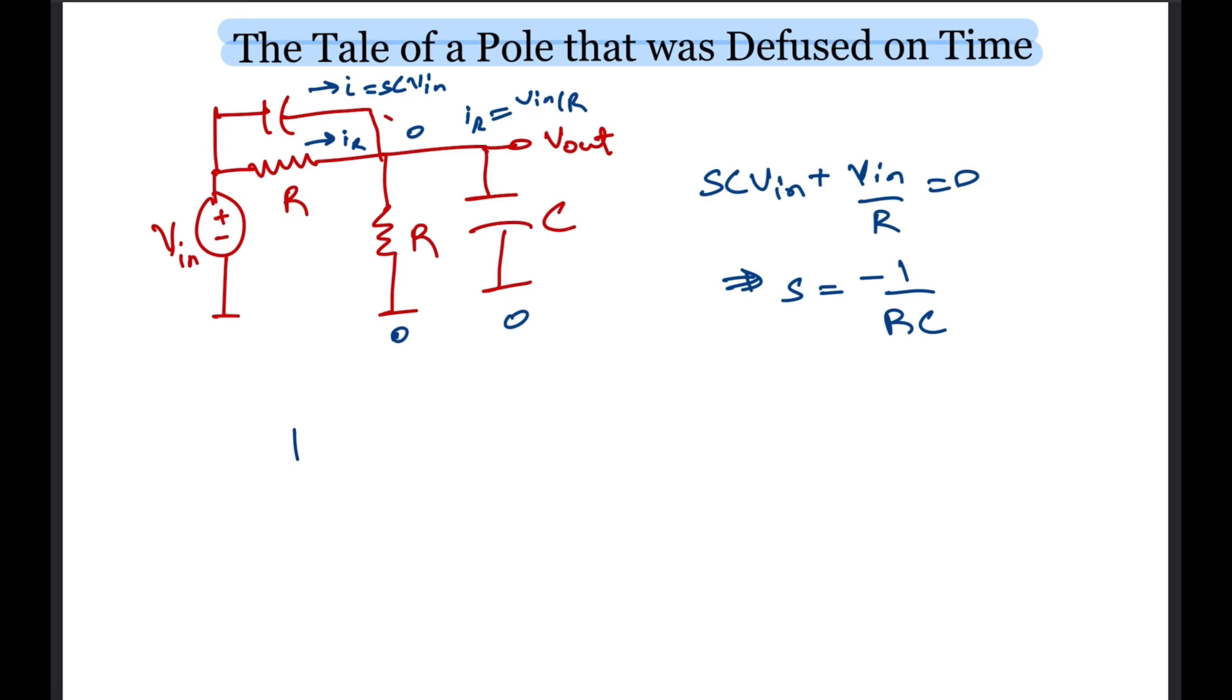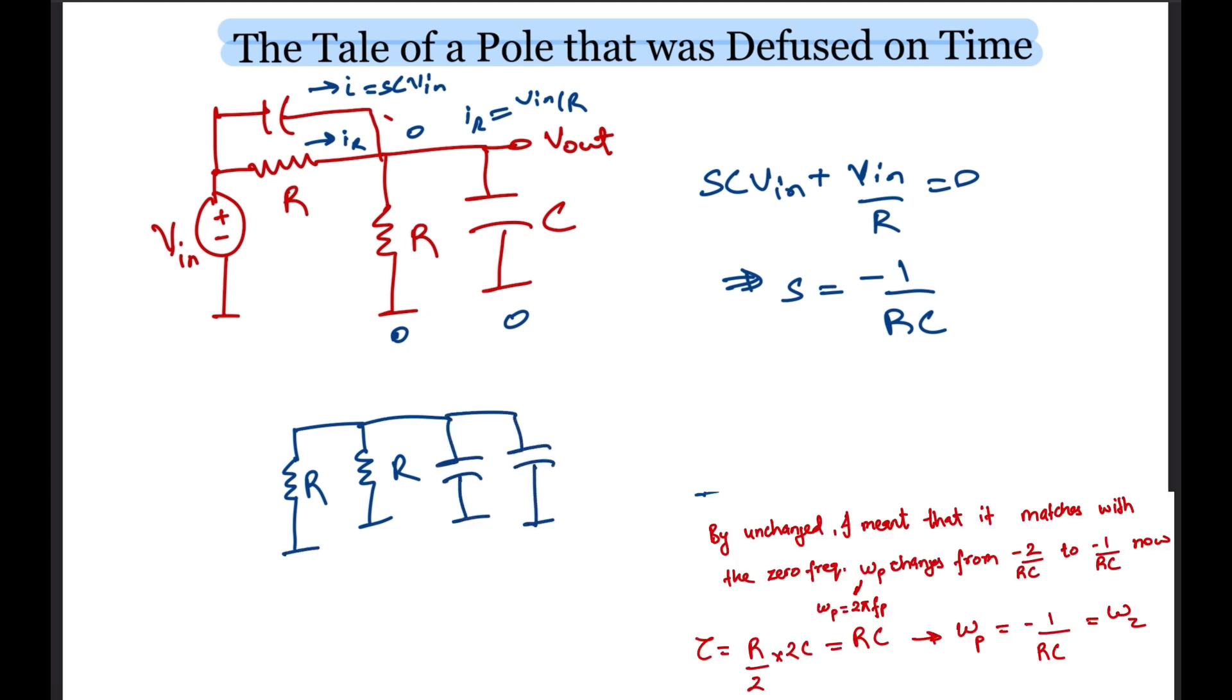If we short the input, we get 2 Cs in parallel and 2 Rs in parallel. Hence, the time constant and the pole locations remain unchanged, which by the way is cancelled by the zero.